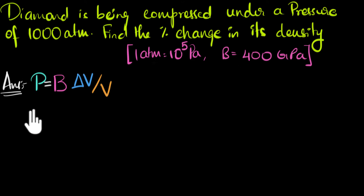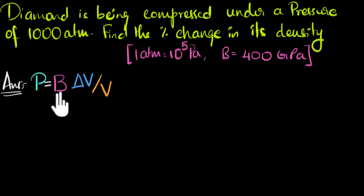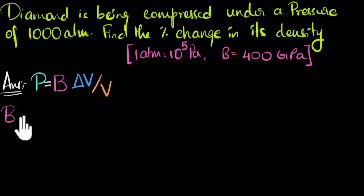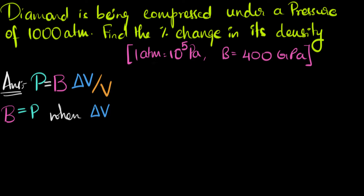So if you're not familiar with this or you require a refresher, it will be a great idea to go back, watch those videos first and then come back. A good way to think about bulk modulus is we could say that bulk modulus equals the pressure when the bulk strain, delta V over V, goes to one — when this number becomes one.